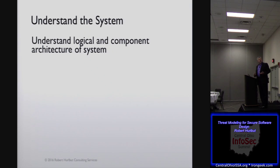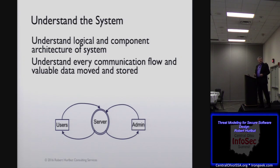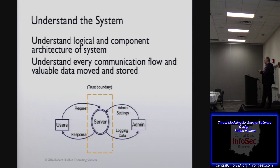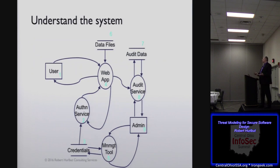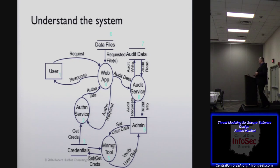In understanding the system, we want to understand the logical and component architecture of the system, and the communication flow between those systems. Here's an example with users, admin, and server — at a very high level: request, response, settings, and logging data, and then a trust boundary. And as you go further into the system and start breaking it out, you've got user, admin, the web app, audit service, other services, data files, credentials, and so on. Then you start labeling them — what's going in between these two? How are they communicating? And then you define some trust boundaries.